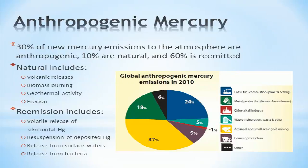Anthropogenic mercury is emitted predominantly from artisanal and small-scale gold mining, fossil fuel combustion, and metal production, but also includes sources such as cement production, the chloroalkali industry, and waste incineration. A majority of new mercury emissions to the atmosphere are a result of human activity.